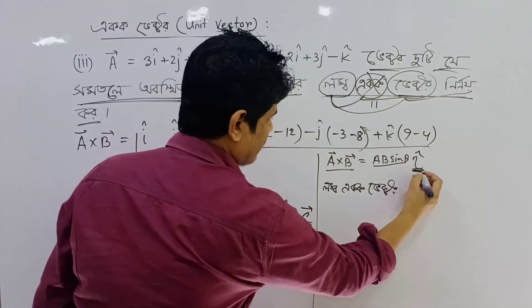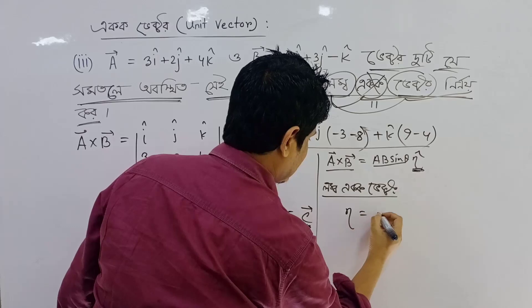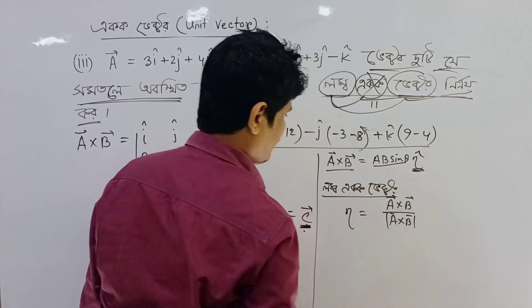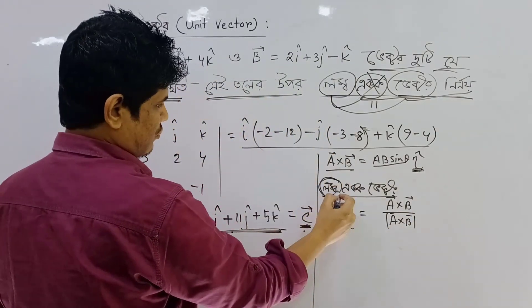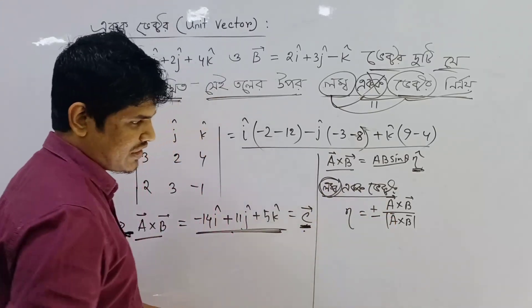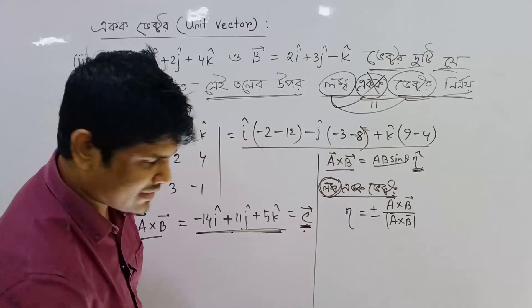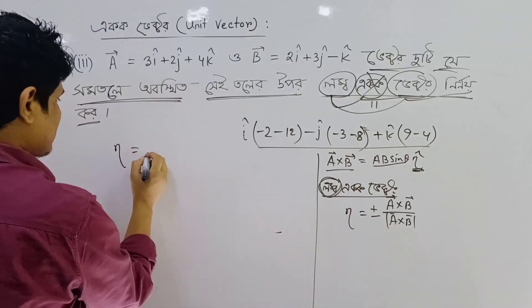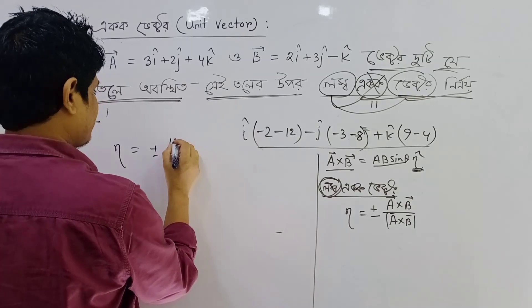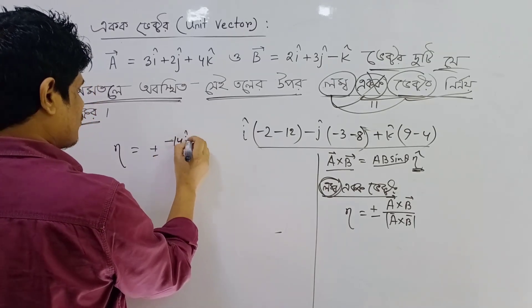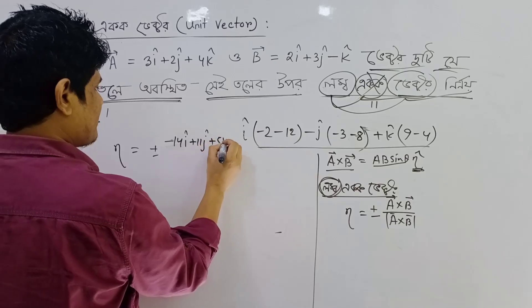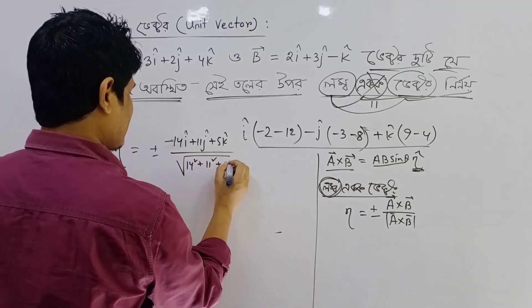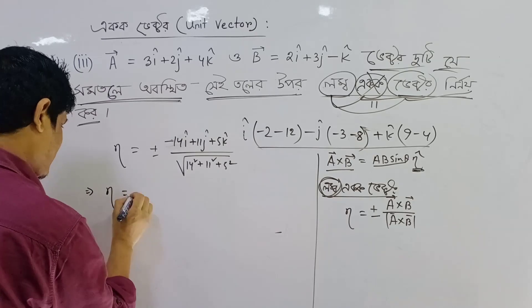A has which equal vector? That would be the unit vector. A cross B is minus 14i plus 11j plus 5k. We will find the unit vector in the same way.